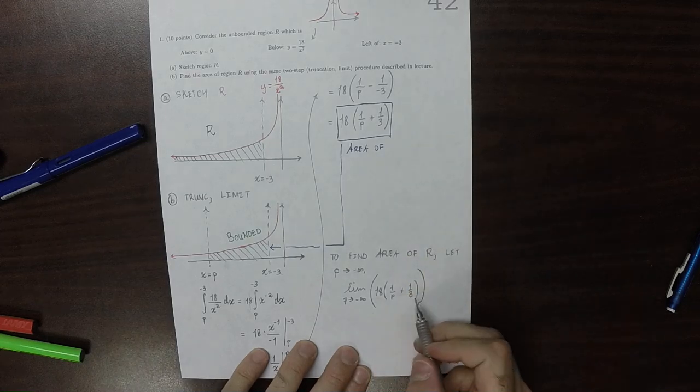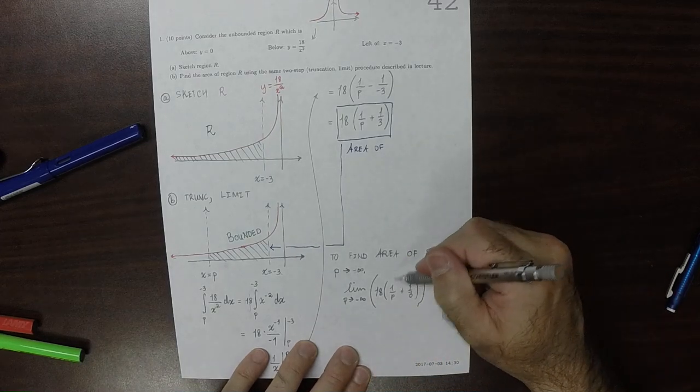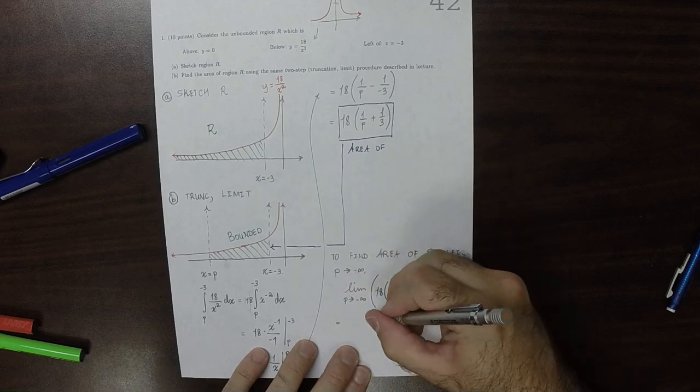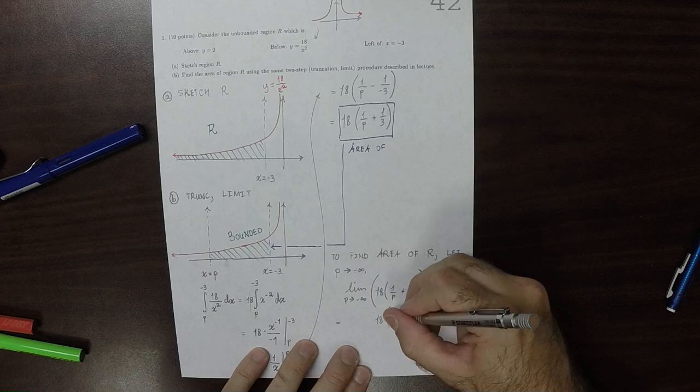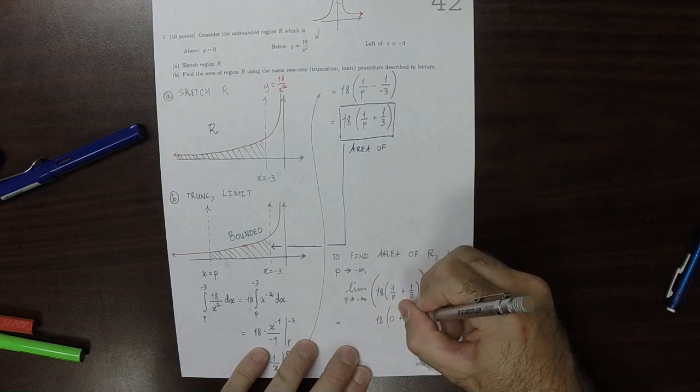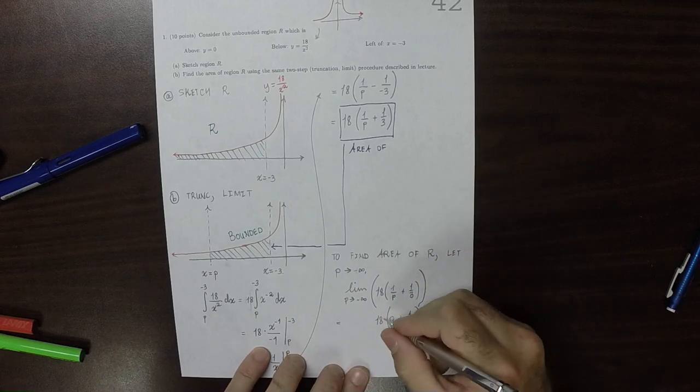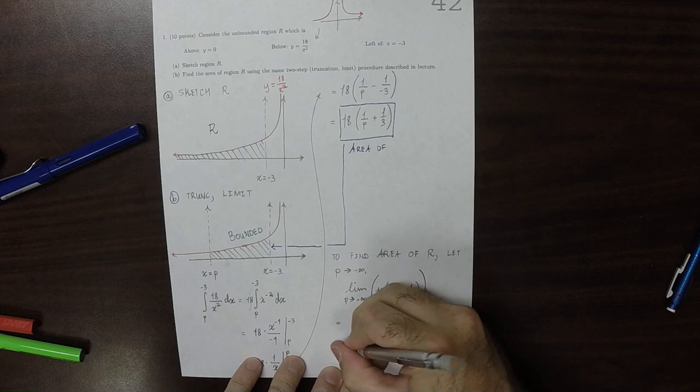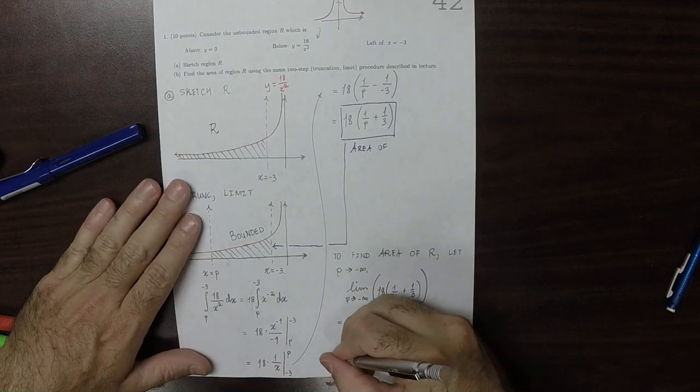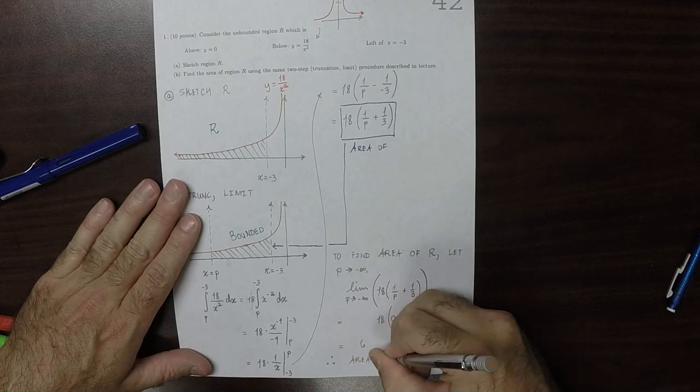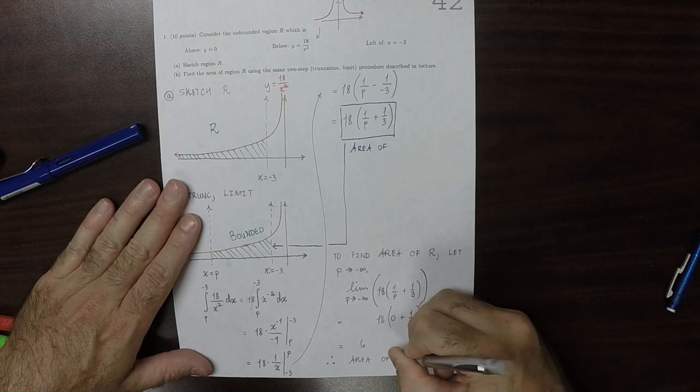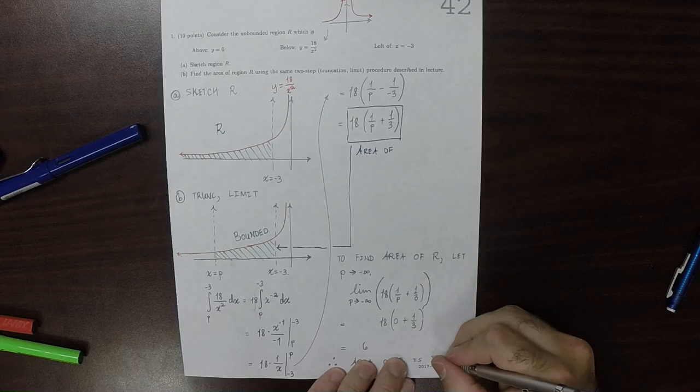Well, 18 is constant. 1 over P is the only thing that's moving. So that would be 18. And then 1 over P, as P goes to negative infinity, is 0 plus 1 third. So that's 18 times 1 third. So the answer is 6. And therefore, the area of R is 6.